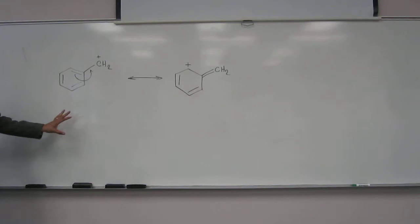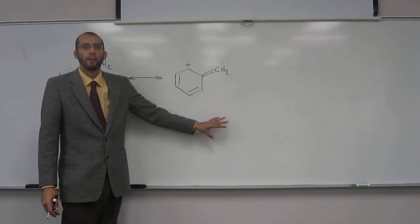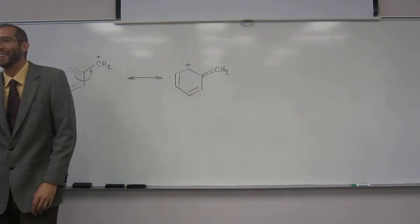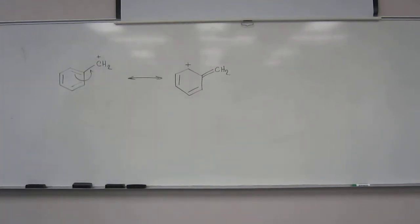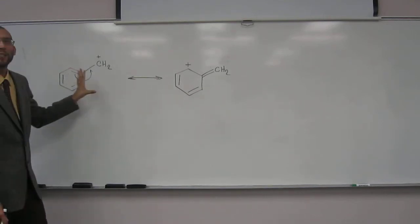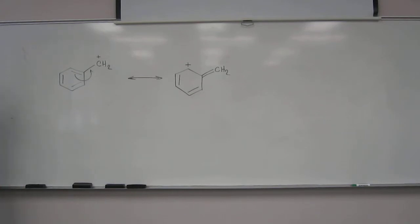So, if there's a positive charge here, what does there have to be over here? A negative charge, or another positive charge? A positive charge, right. Same charge has to be on both sides of the arrow.